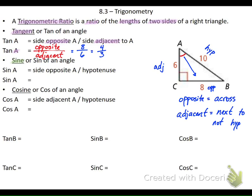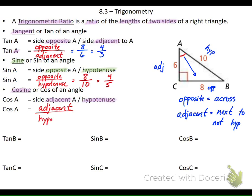The second one is sine, which is opposite over hypotenuse. I put opposite on top and the hypotenuse on the bottom. Still starting from angle A, the side that is opposite is 8, and the hypotenuse is 10, so I can reduce that down to 4 over 5. Then the last one is cosine. Cosine is the side that is adjacent over the hypotenuse. From A, the adjacent side is 6 and the hypotenuse is 10, which reduces down to 3 fifths.